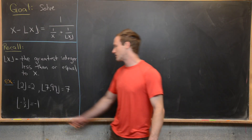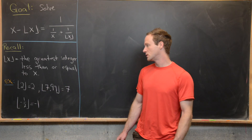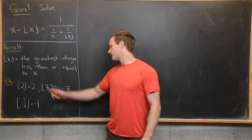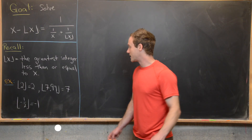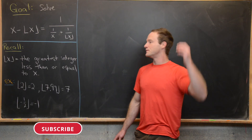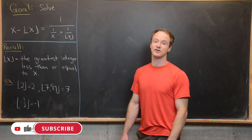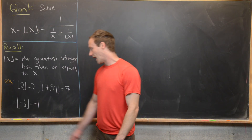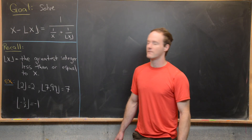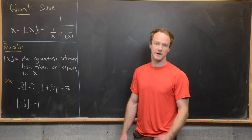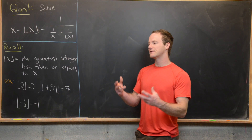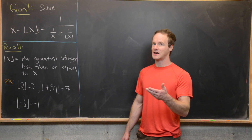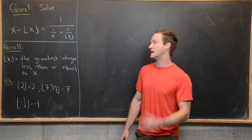For example, the floor of 2 is 2, because 2 is less than or equal to 2. The floor of 7.99 is 7, because that is the greatest integer that is less than or equal to 7.99. And the floor of minus one-half is minus 1. You can think of this as an elevator down to the closest integer, but if you're at an integer, you stay there.